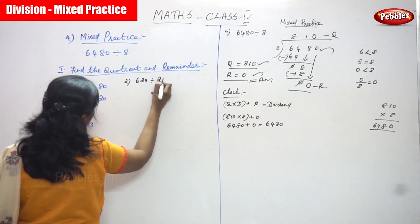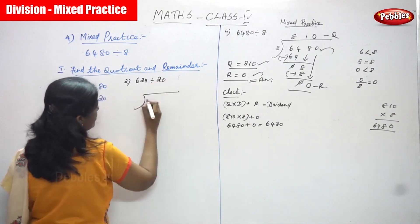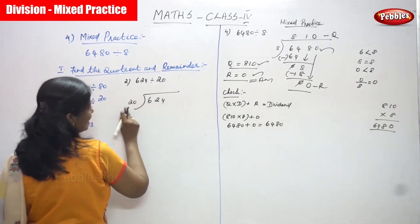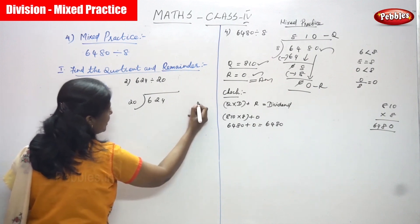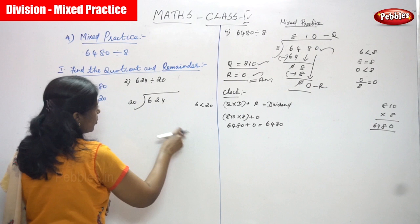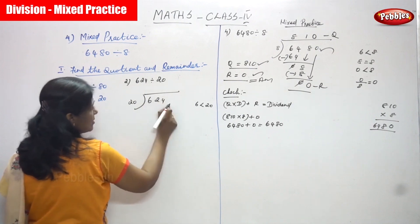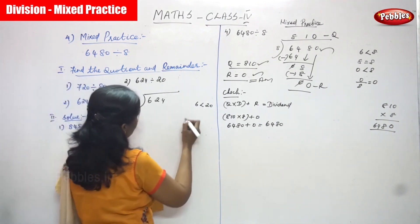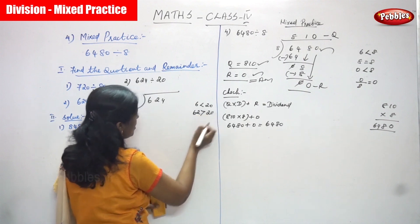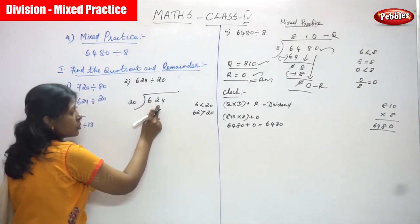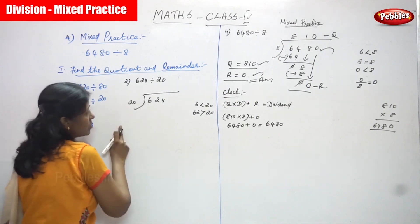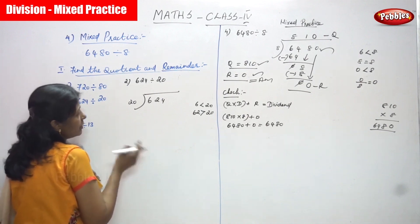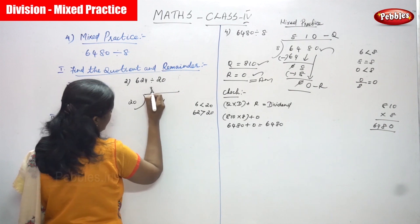624 is divided by 20. 624 is the dividend and this is the divisor. First you have to compare: 6 is less than 20, so you can't divide. You take the next digit — this is a 3-digit dividend and a 2-digit divisor. 62 is greater than 20. In 62, 20 goes how many times? 1 times 20 is 20, 2 times 20 is 40, 3 times 20 is 60. That means 3 times it goes.